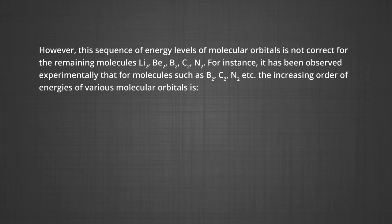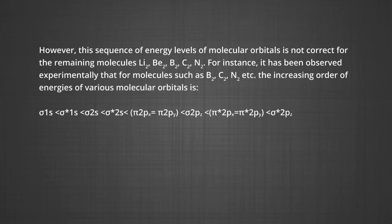However, this sequence of energy levels is not correct for the remaining molecules like lithium, beryllium, boron, carbon and nitrogen. For these molecules, the increasing order of energies of various molecular orbitals is: σ1s < σ*1s < σ2s < σ*2s < π2p_x = π2p_y < σ2p_z < π*2p_x = π*2p_y < σ*2p_z. The important characteristic feature of this order is that the energy of σ2p_z is higher than that of π2p_x and π2p_y molecular orbitals.